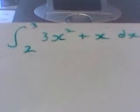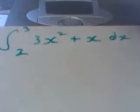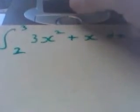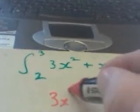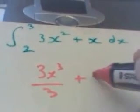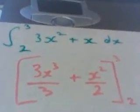Your turn: integrate between 3 and 2 the function 3x squared plus x dx. All right then, let's see how you got on. So first of all you're integrating, so you've got 3x to the 3 over 3 plus x squared over 2, and you're integrating that between the 3 and 2.